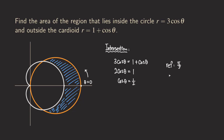The reference angle from cosine theta equals one half is pi over three. Cosine is positive in quadrant one and quadrant four. The intersection point we want is in quadrant one, so we look at that one. We can take advantage of symmetry for the other side. The angle in quadrant one with reference angle pi over three is simply pi over three, so the two curves intersect at theta equals pi over three.